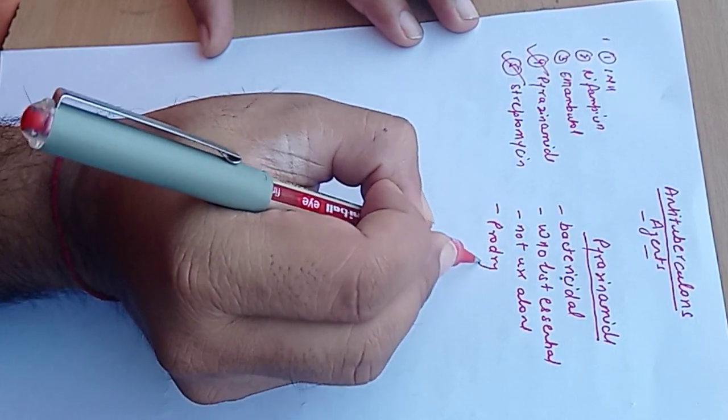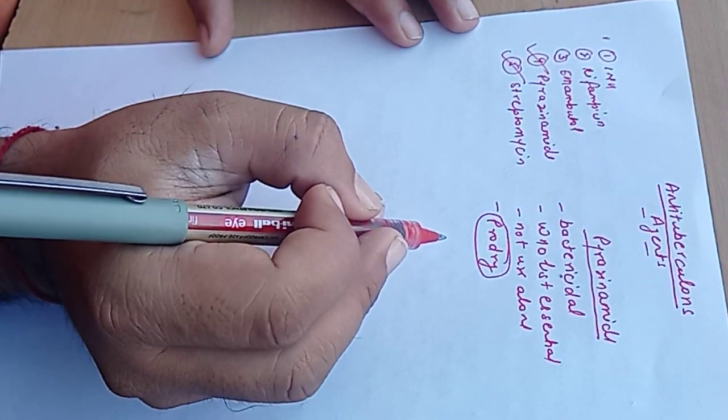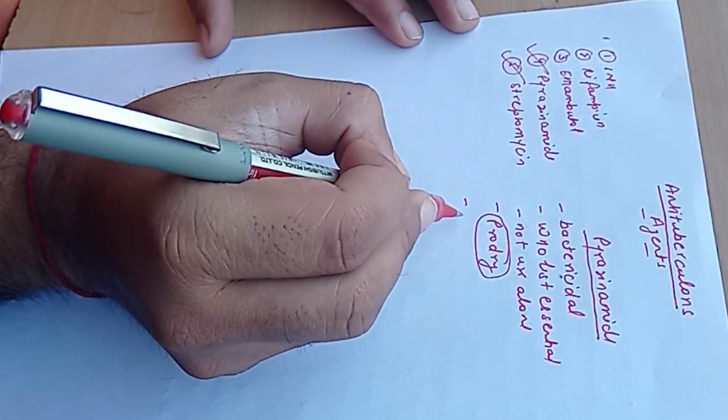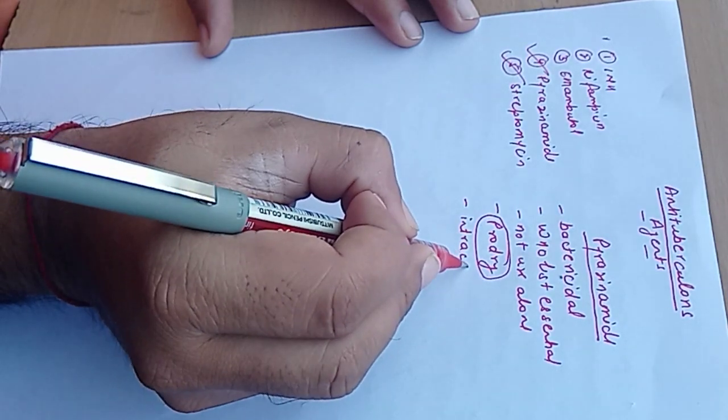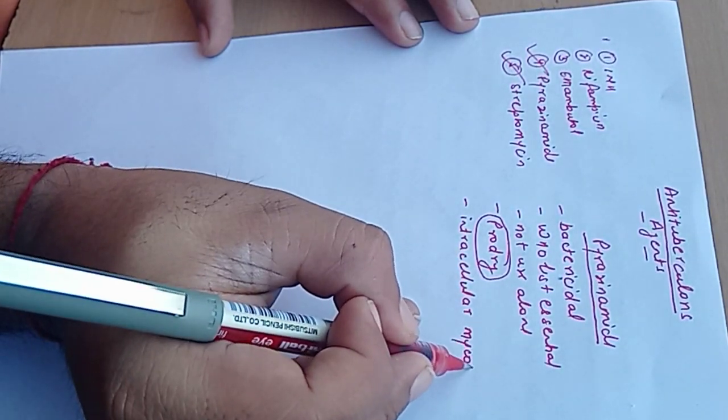Another special thing about this drug is that it is a prodrug, so it's activated inside the mycobacterium. That's why it's useful to kill intracellular mycobacterium.